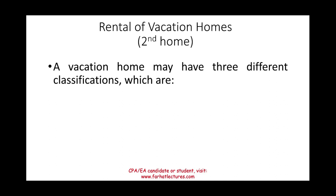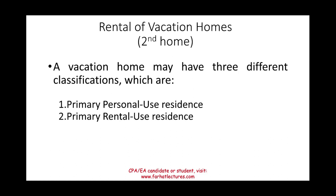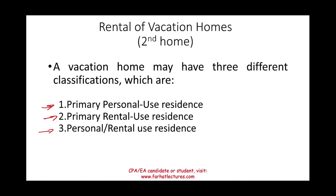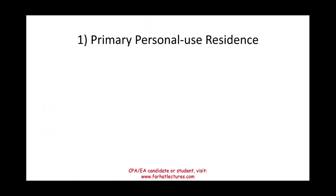A vacation home may have three different classifications: primarily personal use residence, primarily rental use residence, and personal/rental use residence, which is a hybrid category. Before you determine how to treat the income and the expenses from your vacation home, you have to understand what it qualifies under — is it primarily personal use, primarily rental, or the hybrid personal/rental use residence? Starting with primarily personal use residence, which is the easiest category.